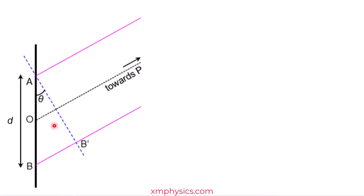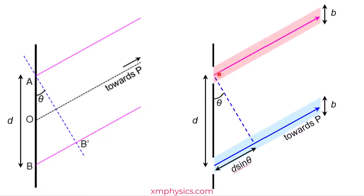And why are there some missing fringes here and here? Today I'm going to reveal something I've been keeping from you. When I was explaining the double slit interference pattern, I told you there's one single ray leaving each slit — but that's not true. Each slit actually has a certain width, so we don't have one single ray but instead an infinite number of rays leaving the slit.